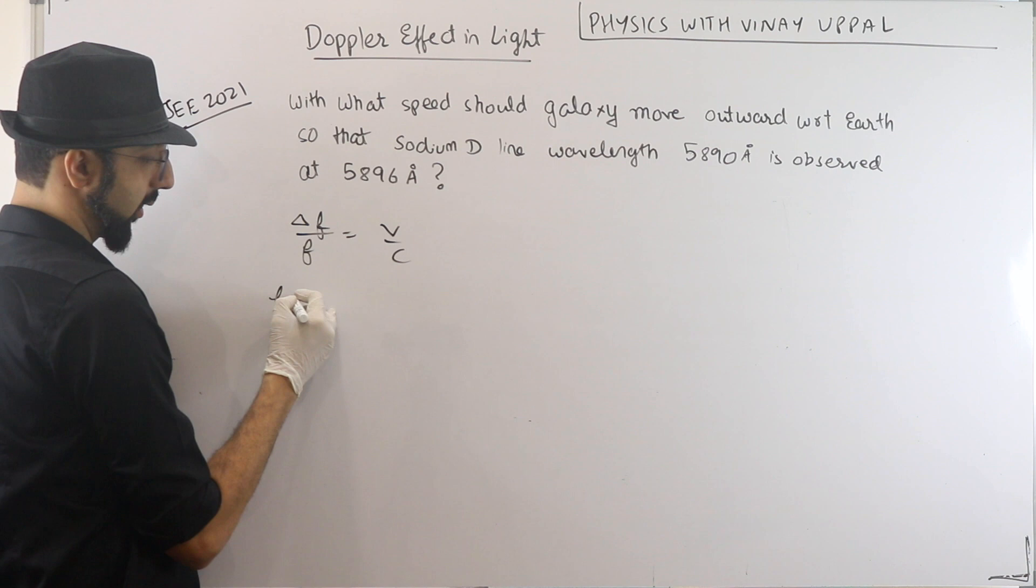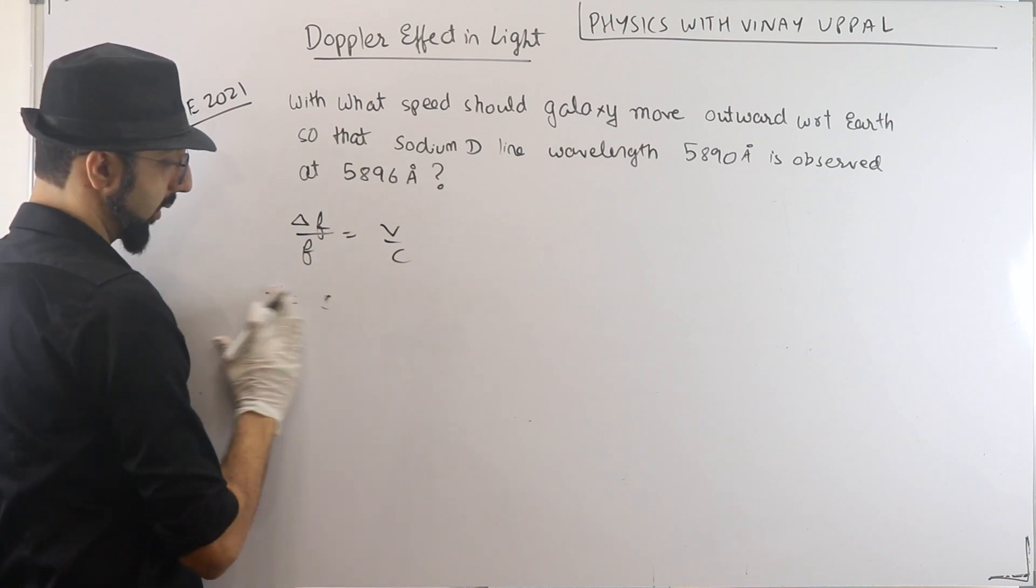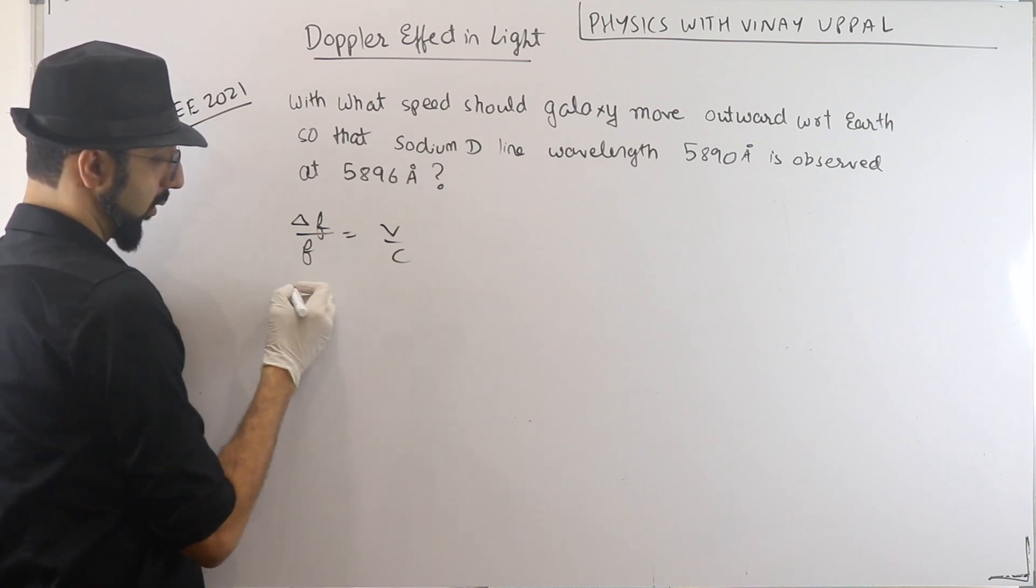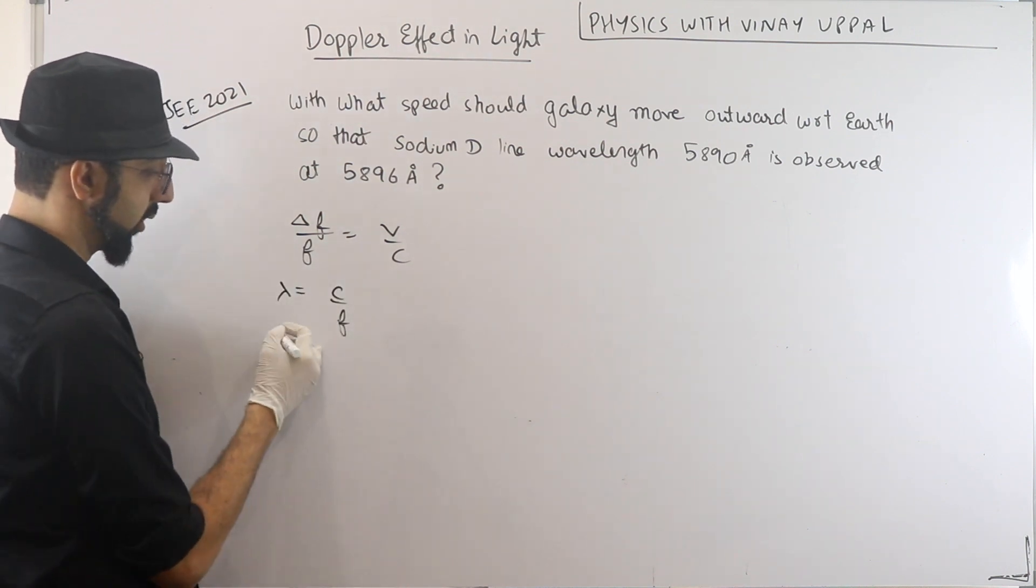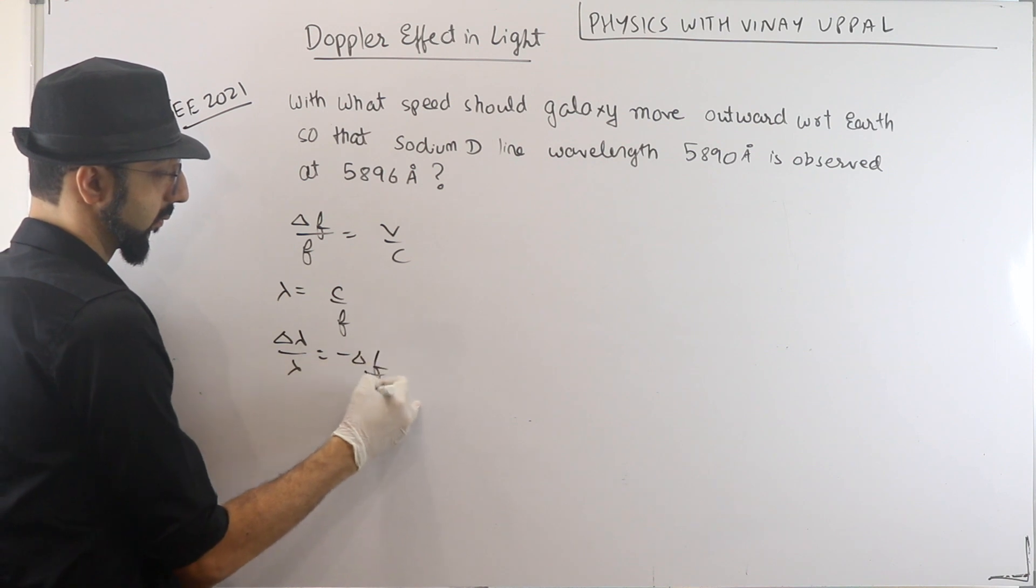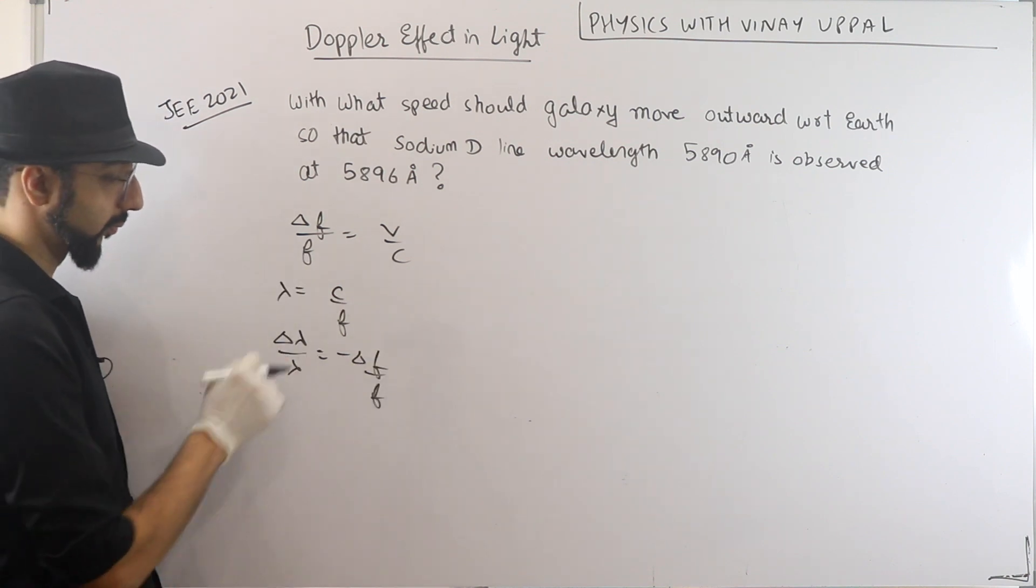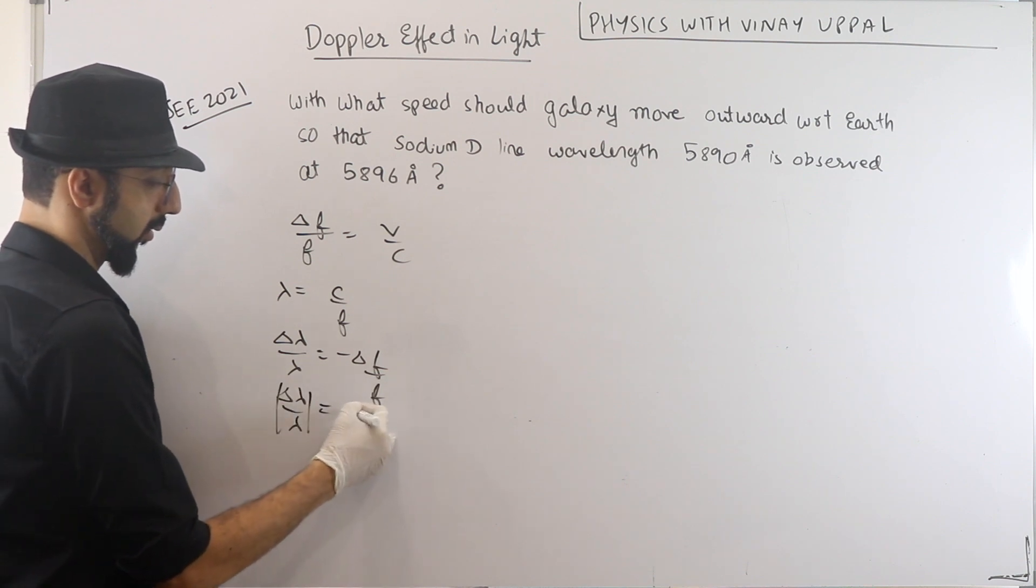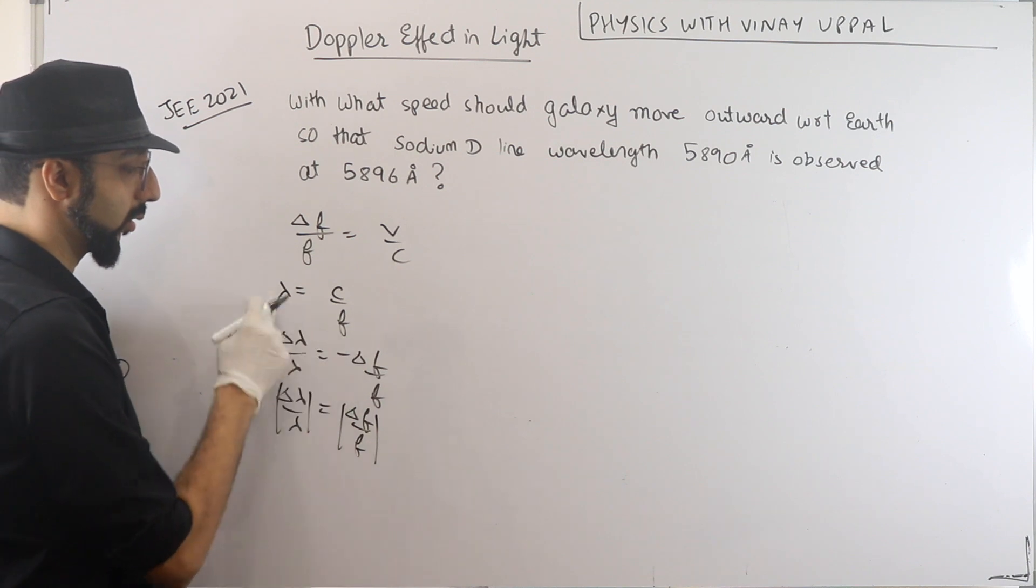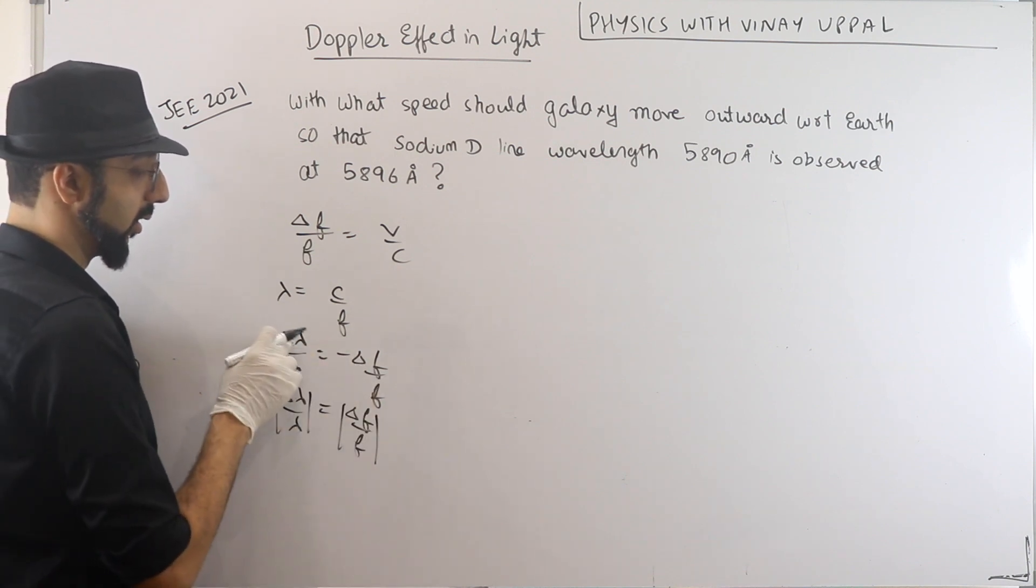We saw that delta F by F is equal to V by C. Correct? But frequency is... Can I write wavelength is C by F? So if you just differentiate, you will get this relation. Switch on. So magnitude-wise, both are the same here. Because C is constant, right? Let's see if you can differentiate it yourself.